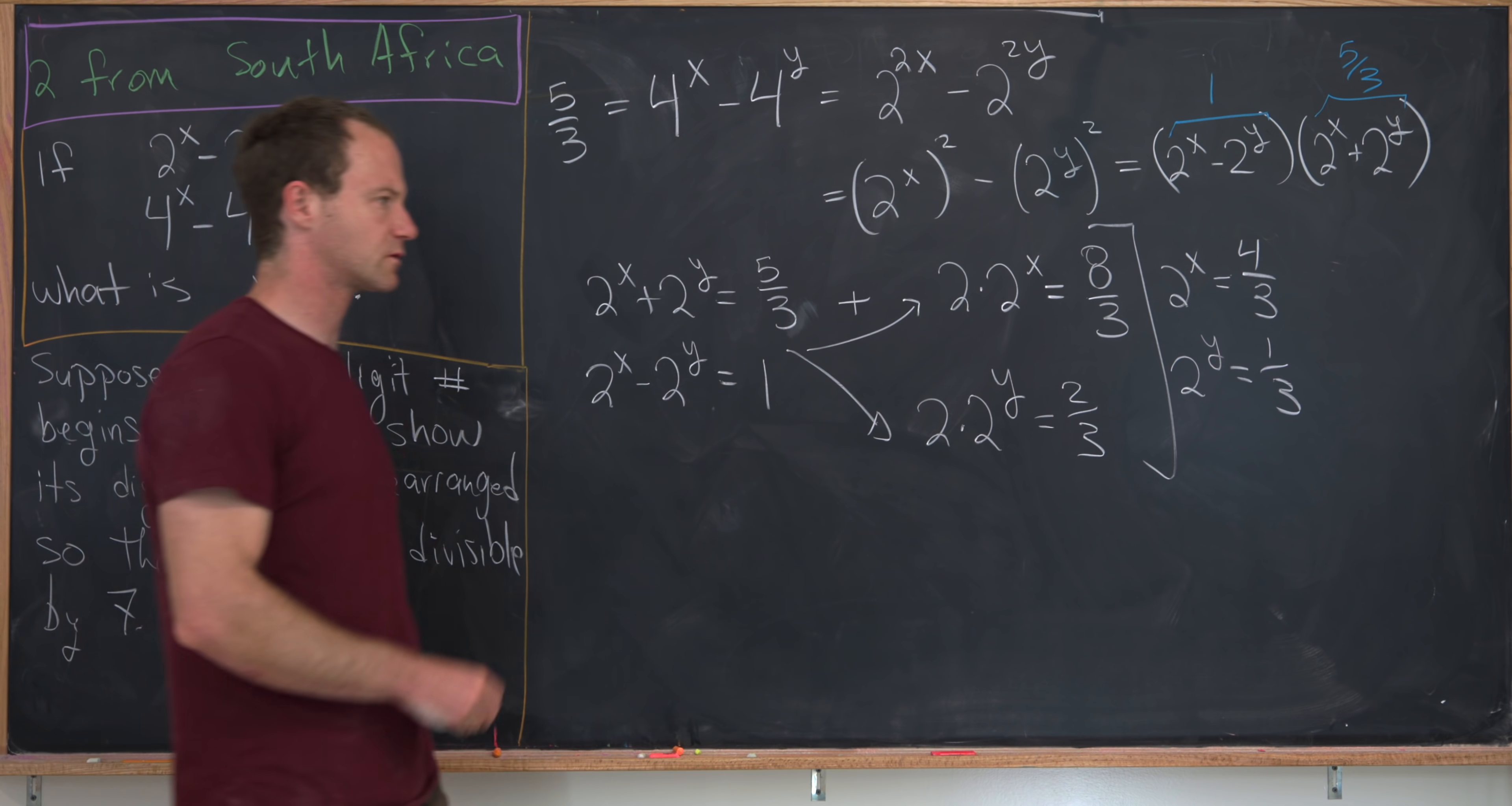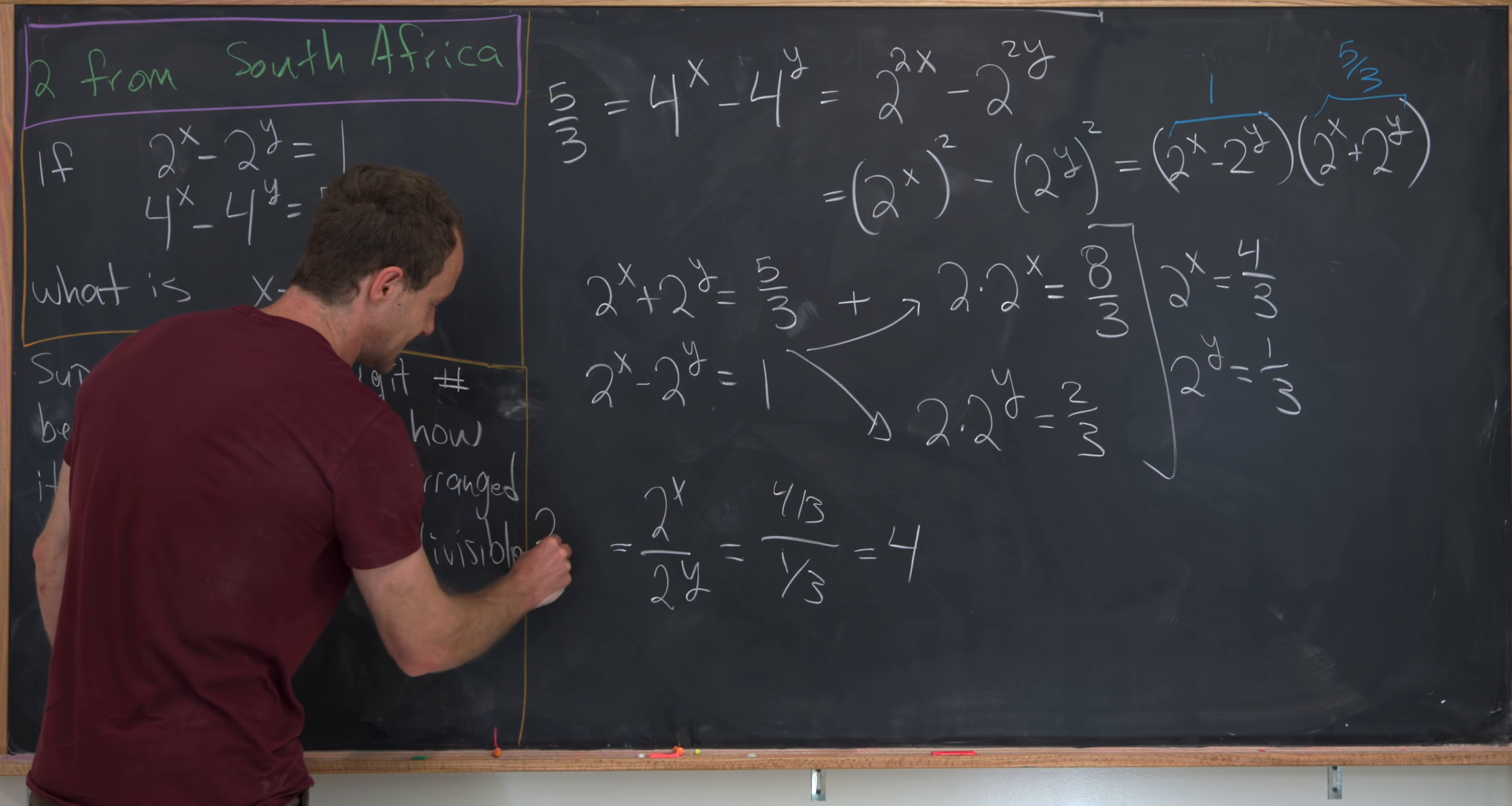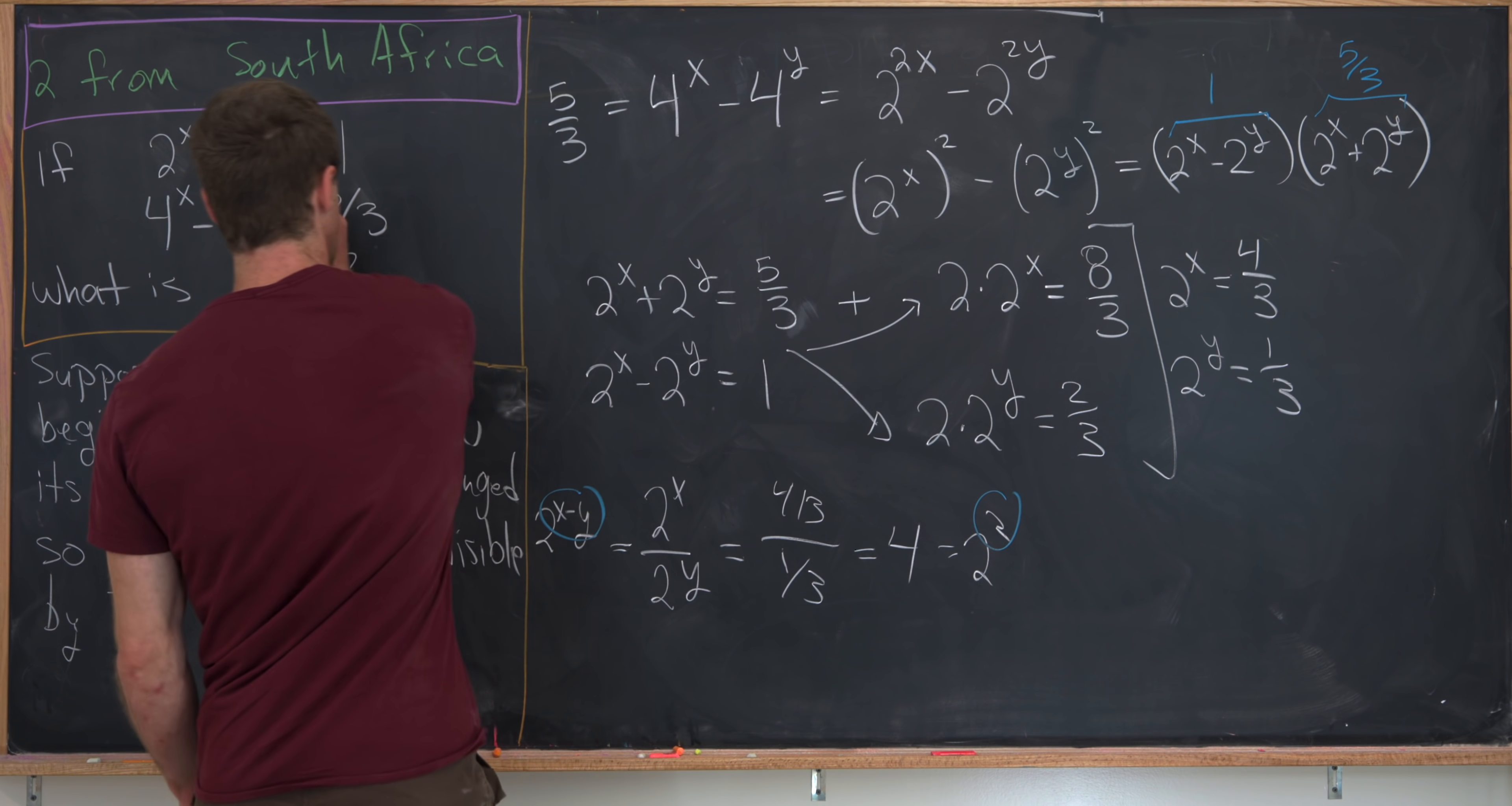Now, using exponent rules along with some division, we see that 2 to the x over 2 to the y is equal to 4 thirds over 1 third, but that's just equal to 4. But over here, we see that's the same thing as 2 to the x minus y. But then 4 is 2 squared. So that tells us that x minus y is, in fact, 2.